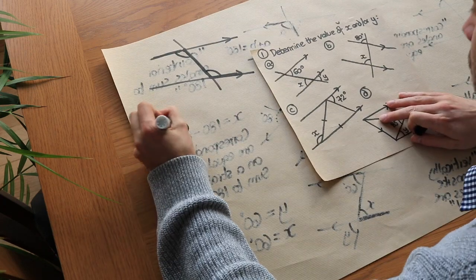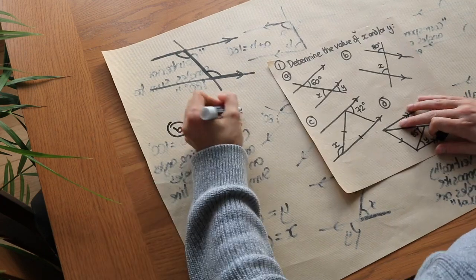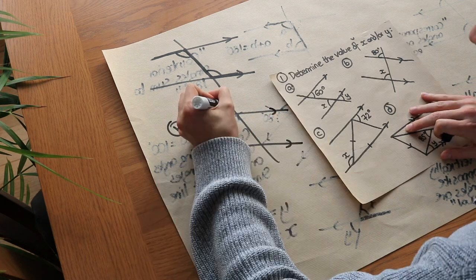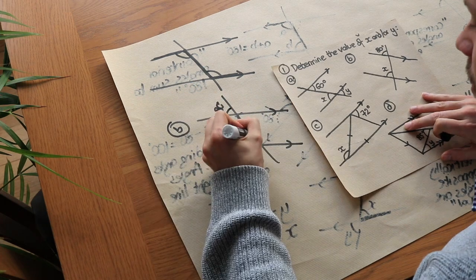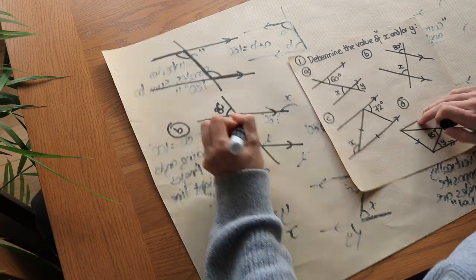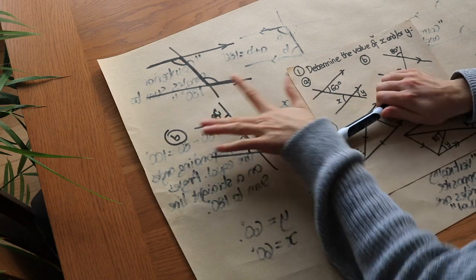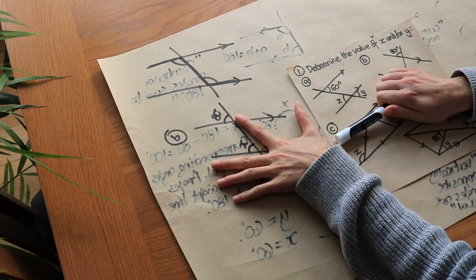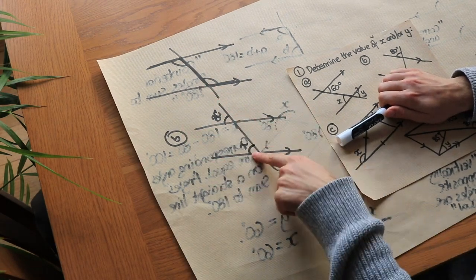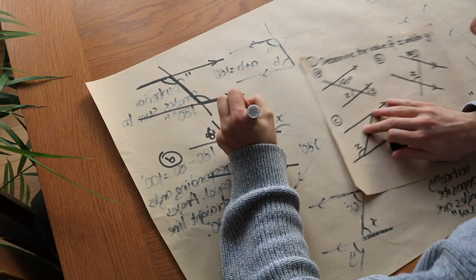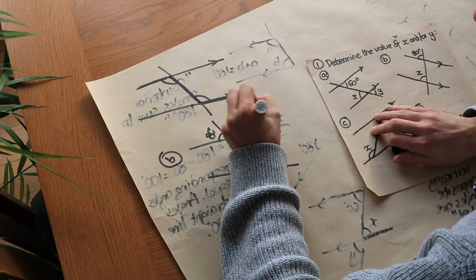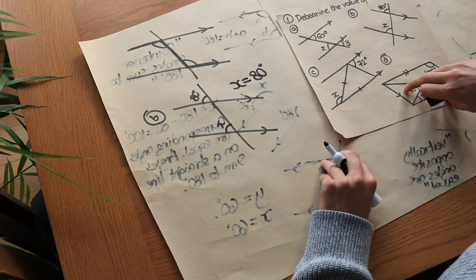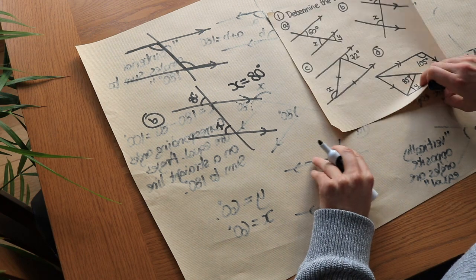Next problem: two parallel lines with a connecting line and an angle of 80 degrees; find X. We shift our hand from one parallel line to the other, so X equals 80 degrees, because corresponding angles are equal.